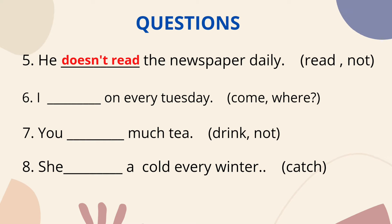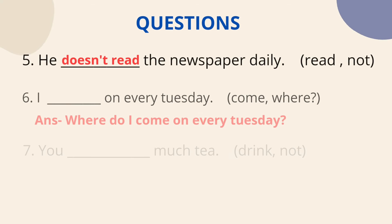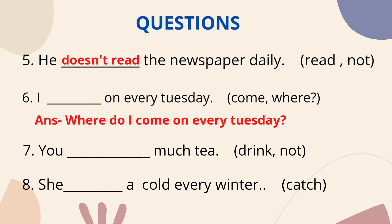Question no.6: we need to put the main verb 'come' and make an interrogative sentence using 'where.' First, positive: 'I come on every Tuesday.' Now for interrogative with 'where,' the helping verb is 'do' because the subject is 'I.' So the answer is: 'Where do I come on every Tuesday?'